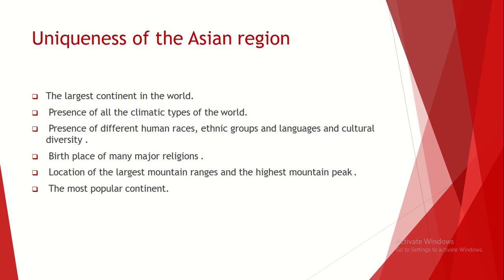The third unique feature is the presence of different human races, ethnic groups, languages, and cultural diversity. The diversity in culture, ethnicity, and races is a special feature of the population of the Asian region. The existence of various languages is another specific characteristic, as various ethnic groups are living there. According to Ethnologue, which provides information on languages in the world, 297 living languages are available in China alone. Our country Sri Lanka also consists of different ethnic groups, language speakers, and religious followers, showing this diversity.